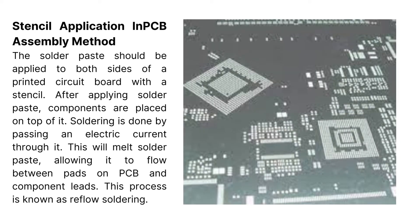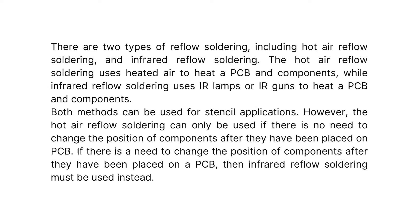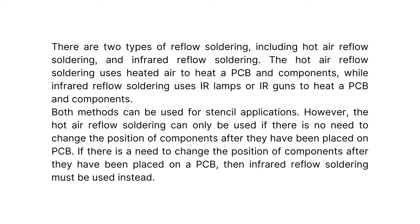In PCB assembly, solder paste should be applied to both sides of a printed circuit board with a stencil. After applying solder paste, components are placed on top of it. Soldering is done by passing an electric current through it, which melts the solder paste and allows it to flow between pads on the PCB and component leads. This process is known as reflow soldering, and there are two types: hot air reflow soldering and infrared reflow soldering.